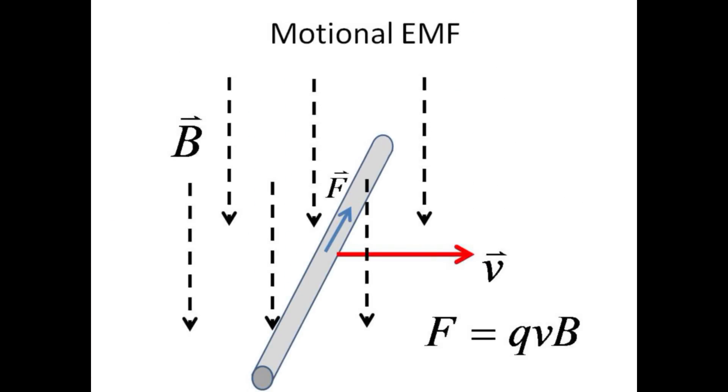You will no doubt recall that the magnetic force on a moving charge is given by the product of Q, V, and B, with the direction given by the right-hand rule.